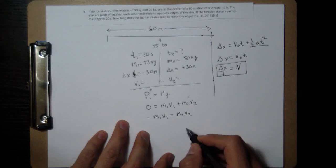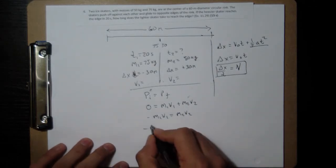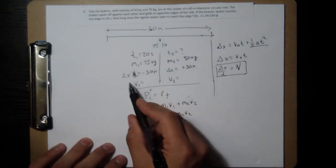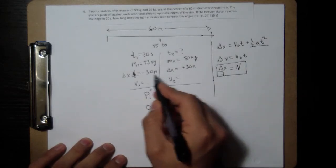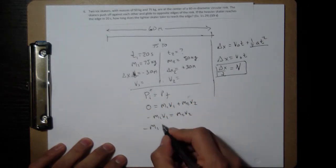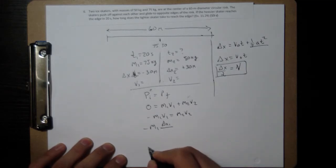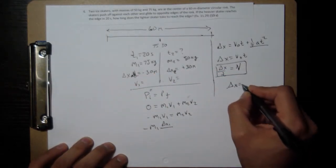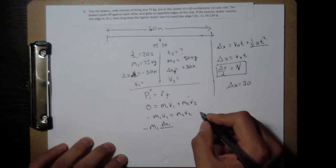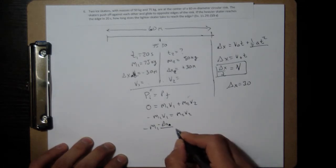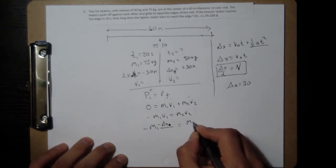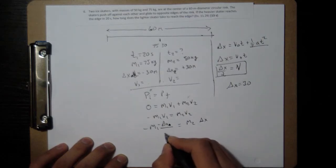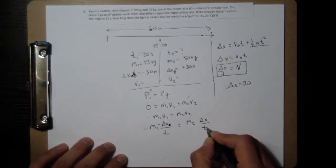So I can replace the velocities with delta x over t. Negative m1, they both have, but they don't have exactly the same delta x right, because this one's negative, this one's positive. Here's what we'll do, I'm going to say delta x is 30 and I'm going to write this one is negative delta x and this one is positive delta x over time t1, over time t2.